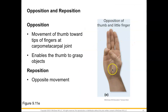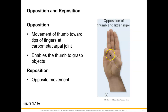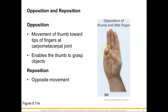Opposition is when the thumb moves toward the tips of the fingers at the carpometacarpal joint between the carpals and the metacarpal, allowing the thumb to grasp objects. Without opposition of the thumb, detailed hand movements would be very difficult. Reposition is the opposite — moving the thumb back. Opposition doesn't have to be at the fifth finger; it can occur with any of the other fingers as well.